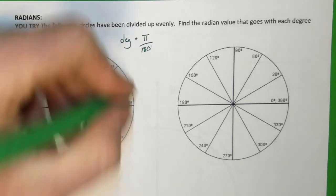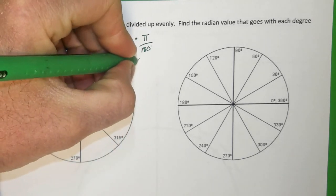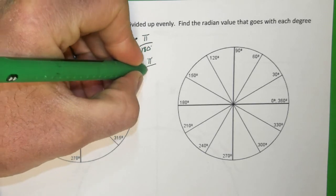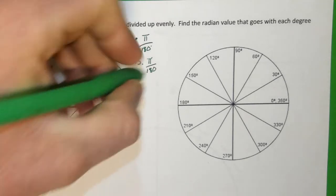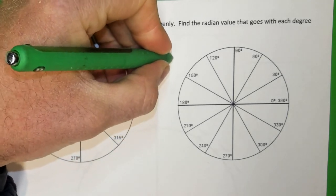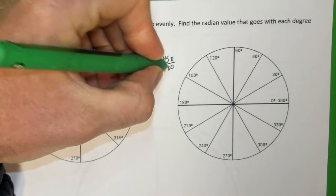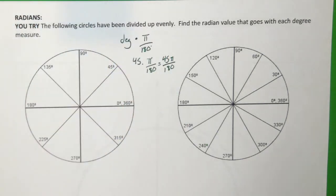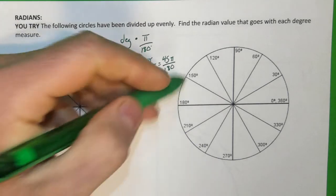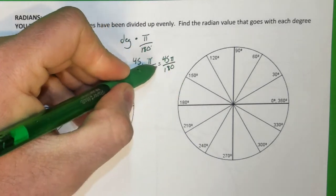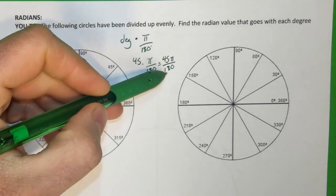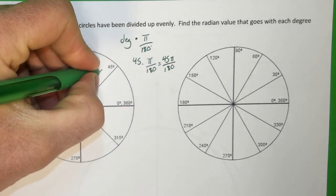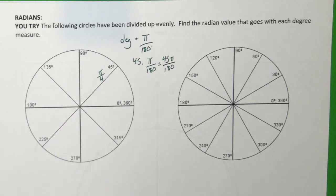Let's start with 45 degrees. If I take 45 degrees and multiply it by pi over 180, what's going to end up happening is that I'm going to build a new fraction containing the 45, the pi, and the 180. Now that's a big ugly fraction, so it would be great to reduce it. We're not going to be able to reduce the pi, so we'll leave that alone. But 45 over 180 reduces — the greatest common factor is actually 45. Since 45 times 1 is 45 and 45 times 4 is 180, that means pi over 4 is the same as 45 degrees.